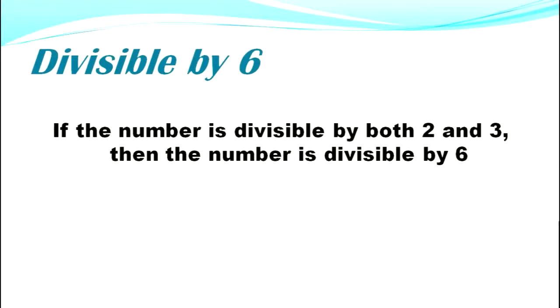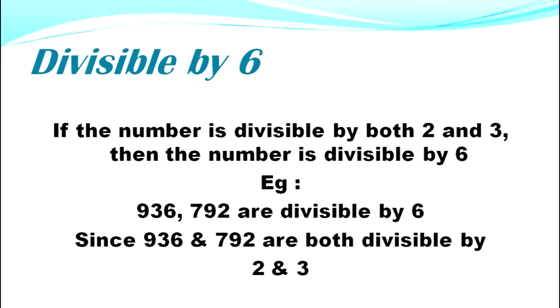Divisible by six: if the number is divisible by both two and three, then the number is divisible by six. Example: 936 and 792 are divisible by six, since both are divisible by two and three.